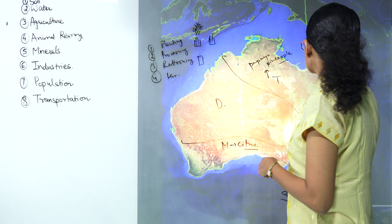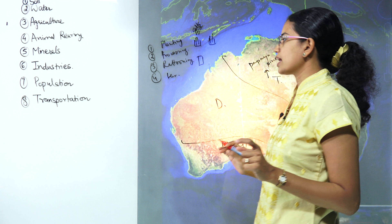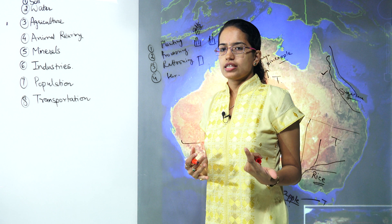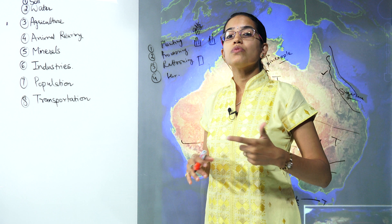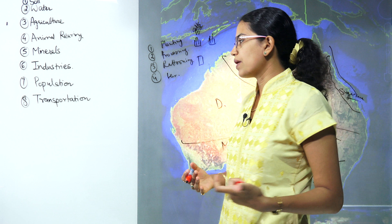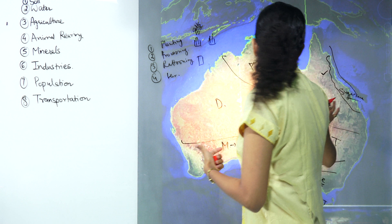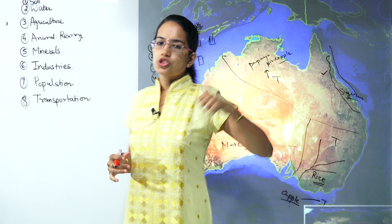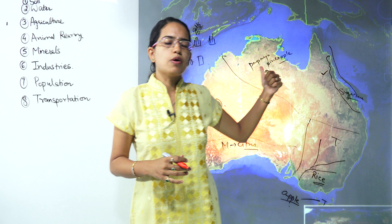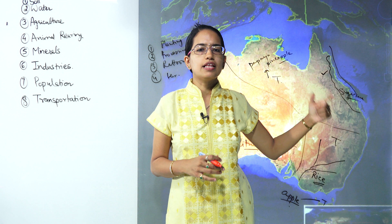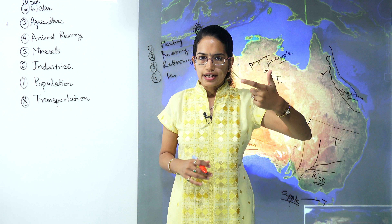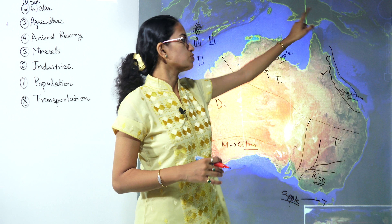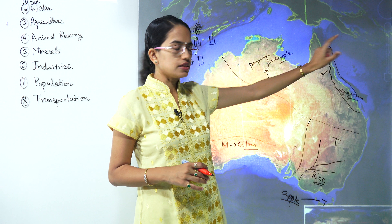Sugarcane industry is very important in Australia. When we talk about sugarcane industry there are numerous by-products, and we also talk about the regions where sugarcane is exported. The sugarcane from Australia mainly goes to Canada, then to Japan and Malaysia - those are the neighboring regions.